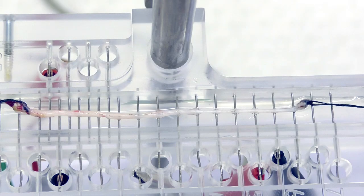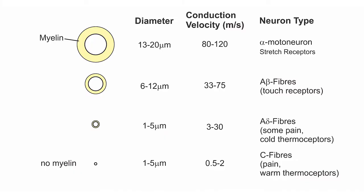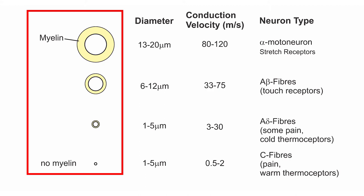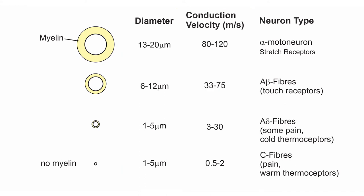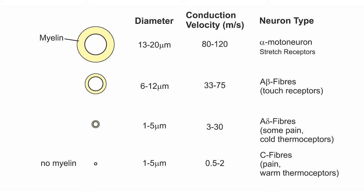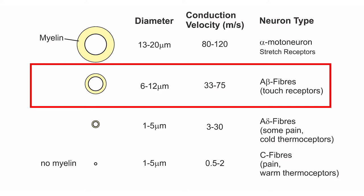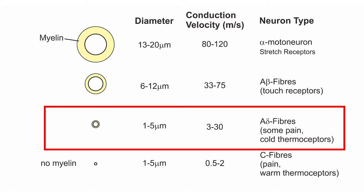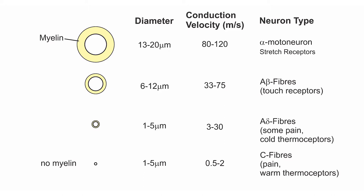The nerve we're looking at is the sciatic nerve, which is a very large mixed nerve carrying lots of different fibre types. All those different fibre types have different diameters, different levels of myelination, and therefore different conduction velocities. The very large ones are the alpha motor neurons and stretch receptors, which have very large diameters and very fast conduction velocities. A-beta fibres — some of the touch fibres — are intermediate in size with intermediate myelination and slightly lower conduction velocity. A-delta fibres, including some pain fibres and cold thermoreceptors, are even smaller with a smaller conduction velocity. C-fibres, used for some types of pain and warm thermoreception, are very small diameter, have no myelin, and have a very slow conduction velocity.